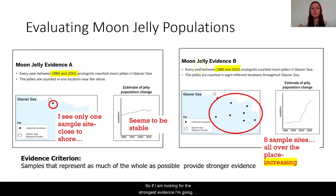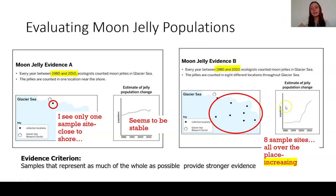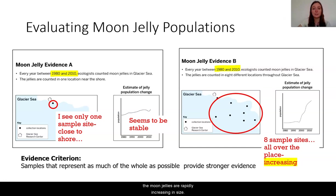So if I'm looking for the strongest evidence I'm going to go with moon jelly evidence B, and this backs up what Dr. Robinson is observing — that the moon jellies are rapidly increasing in size.